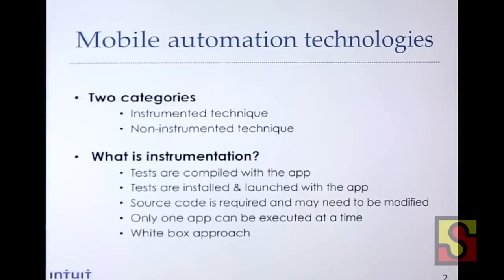There's also another form of instrumentation that requires some hooks into your application — one example is the Accessibility API in iOS, which allows you to drive your application with that API. Your tests do need to run with your app. In both approaches, only one app can be tested at any one time — you can't switch or do more complex cross-app testing. It's also known as a white box technique because you know the element type, name, and content, versus non-instrumentation which is image-based and considered more of a black box approach.